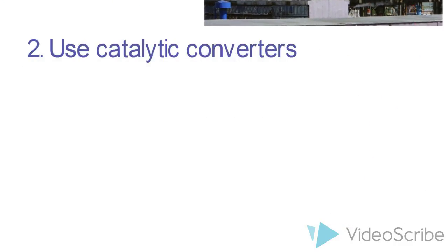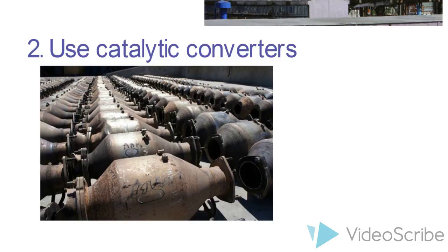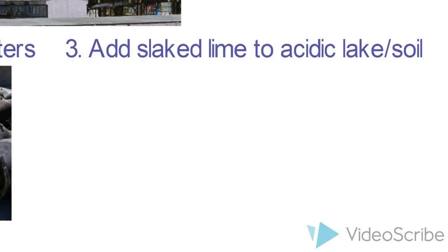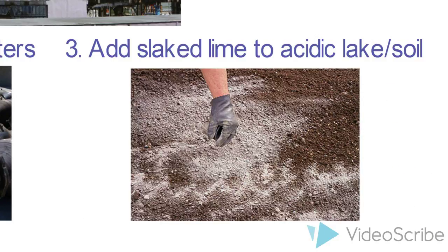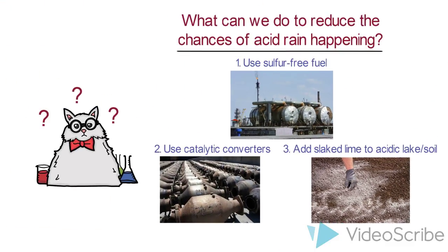Secondly, we can also use catalytic converters which will reduce the amount of oxides of nitrogen that are released into the air. And this is in fact found in many modern vehicles right now. Last but not least, we can add slaked lime to soil or calcium carbonate to lakes or soil for neutralization. And these are just some of the ways that we can help and do to prevent acid rain from happening.